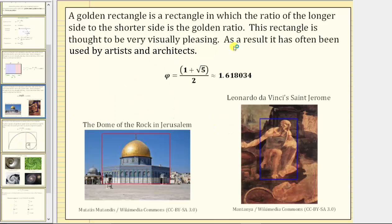And here are two examples. Here we have a golden rectangle in the dome of the rock in Jerusalem. And here we have the golden rectangle in Leonardo da Vinci's St. Jerome.